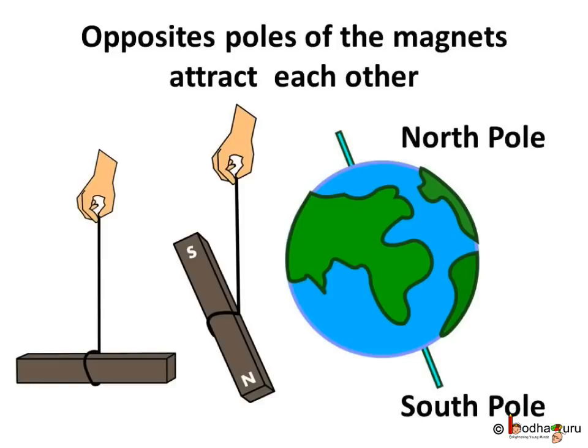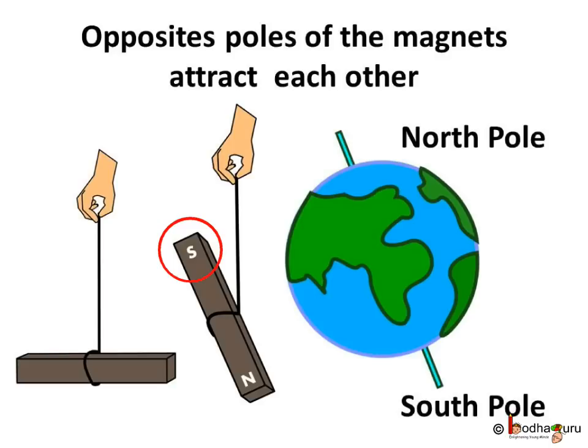Now, coming back to our freely suspended magnet. Since there is another huge magnet — that is the Earth — the opposite poles of the two magnets, Earth and the freely suspended magnet, should attract each other. So you may argue that the North Pole of a freely suspended magnet should get attracted towards the South Pole of the Earth, and the South Pole of a freely suspended magnet should point towards the North Pole of the Earth.